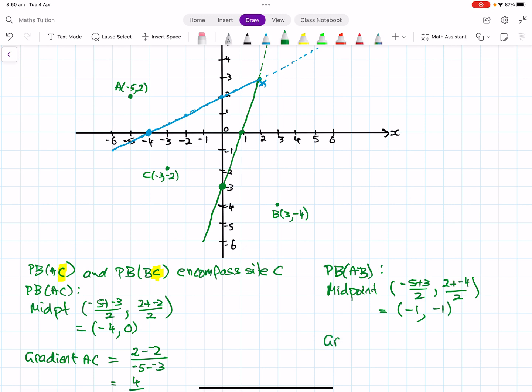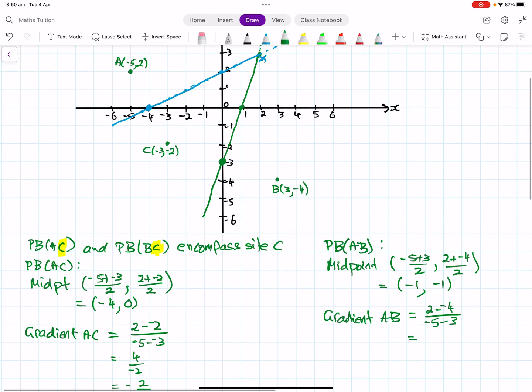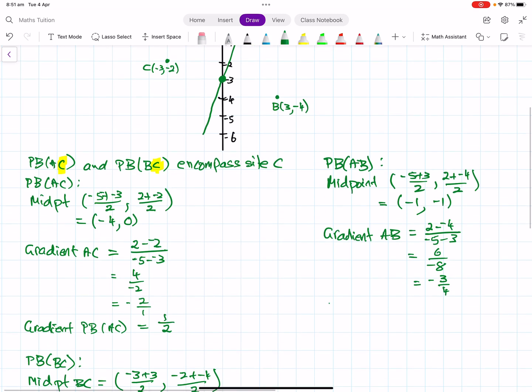And now the gradient of the actual line AB will be rise over run. So it will be 2, take away negative 4, over negative 5, take away 3, which is 6 over negative 8, which is negative 3 quarters. So that means the gradient of the perpendicular bisector of AB will be, flip it upside down, change its sign, 4 thirds.